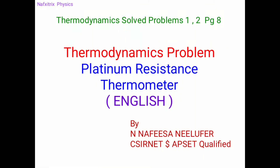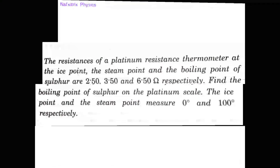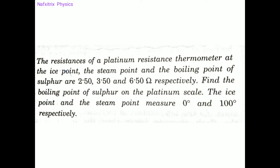Let's discuss a problem from thermodynamics related to the topic of platinum resistance thermometer. We will discuss two problems. The first problem: the resistances of a platinum resistance thermometer at the ice point, the steam point, and the boiling point of sulfur are 2.50, 3.50, and 6.50 ohms respectively.